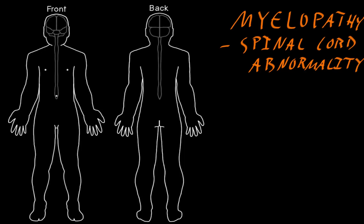Myelopathy is usually a focal problem of the central nervous system, because most of the disorders that affect the spinal cord will just affect one part of it or a smaller area of the total spinal cord. And depending on how much of the spinal cord is affected, myelopathy may cause somatosensory, motor, or autonomic dysfunction for parts of the limbs or torso connected to the affected spinal cord levels and all the levels below.